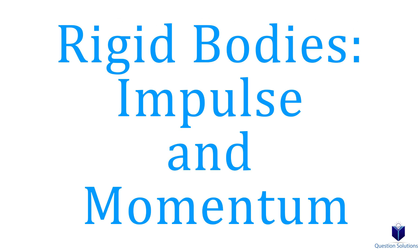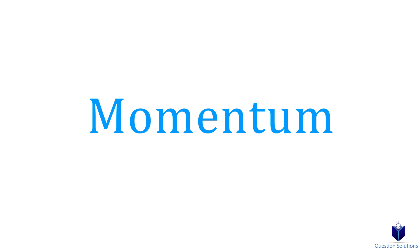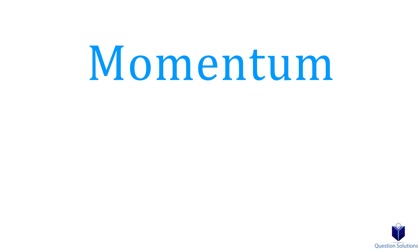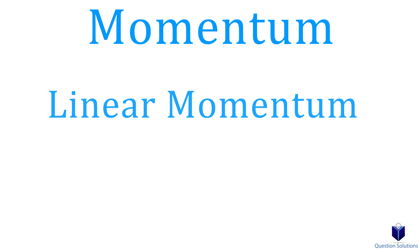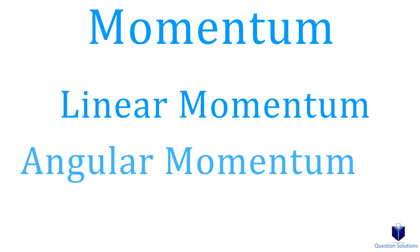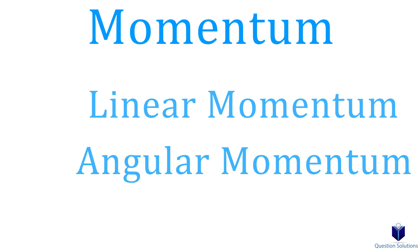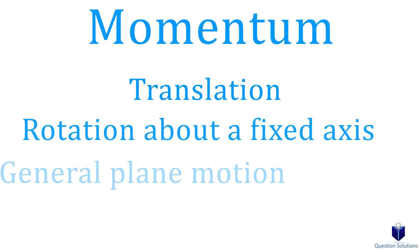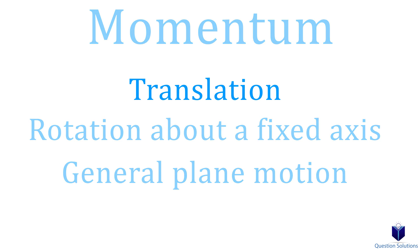Let's talk about impulse and momentum when it comes to rigid bodies. Momentum can be broken into two parts: linear momentum and angular momentum. Since we have three broad groups for rigid bodies, let's go through finding momentum in each of these cases.